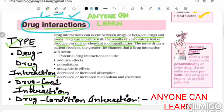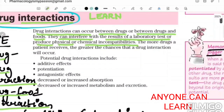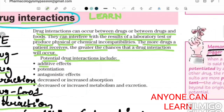The more drugs a patient receives, the greater the chances that a drug interaction will occur. If a patient is receiving multiple drugs, there are more chances of side effects. Potential drug interactions include additive effects, potentiation, antagonistic effects, decreased or increased absorption, decreased or increased metabolism, and excretion.